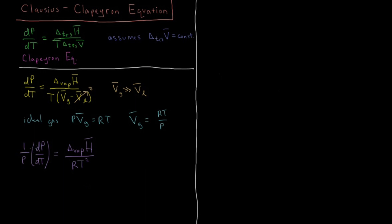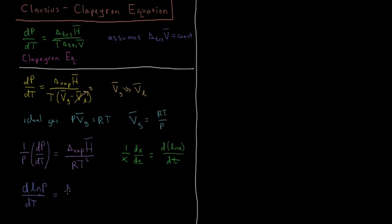We can simplify the left side of the equation. If we have (1/x)(dx/dt), this equals d(ln x)/dt by the chain rule, since the derivative of ln x is 1/x, giving (1/x)(dx/dt). So we can replace (1/P)(dP/dT) with d(ln P)/dT, giving us: d(ln P)/dT = ΔvapH̄ / RT².